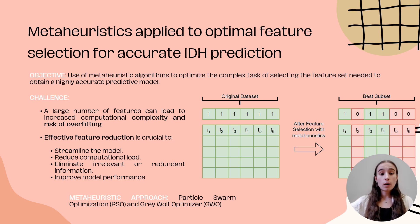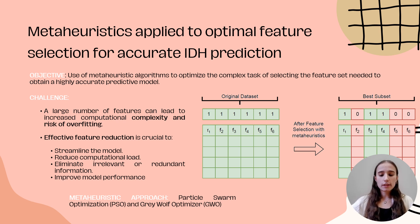One of the key challenges in developing predictive models for medical applications is handling the large number of features, which can increase complexity and overfitting. We used two metaheuristic algorithms, PSO and GWO, to reduce the feature set and improve model performance.